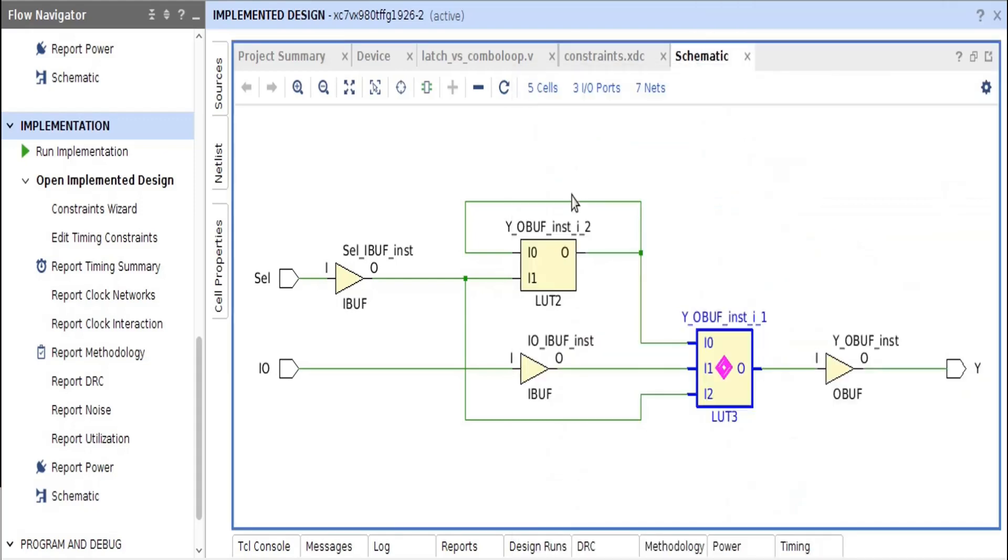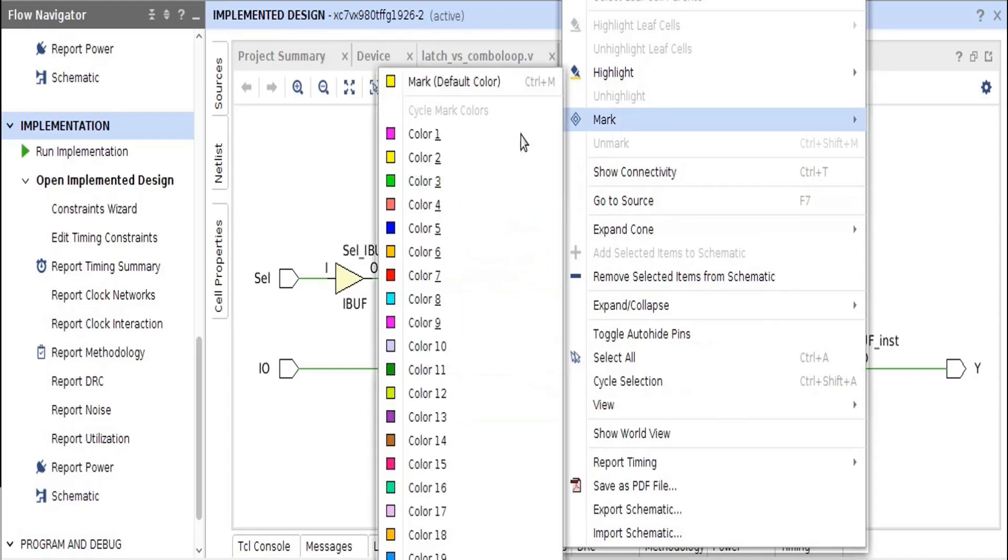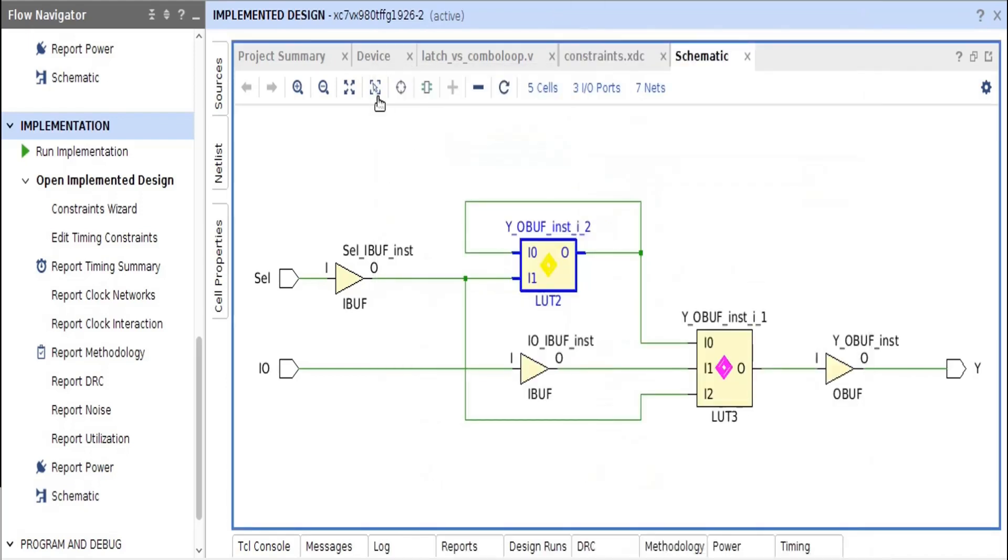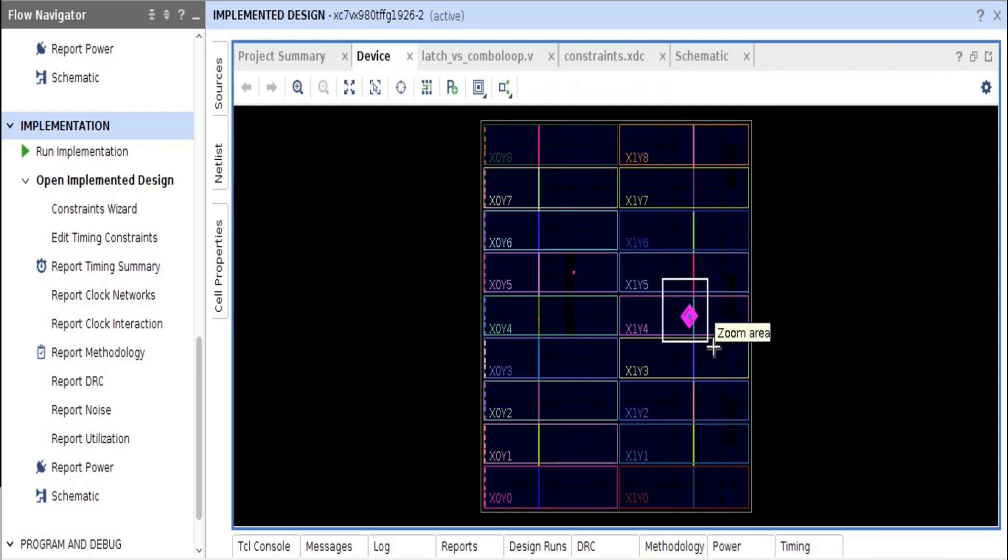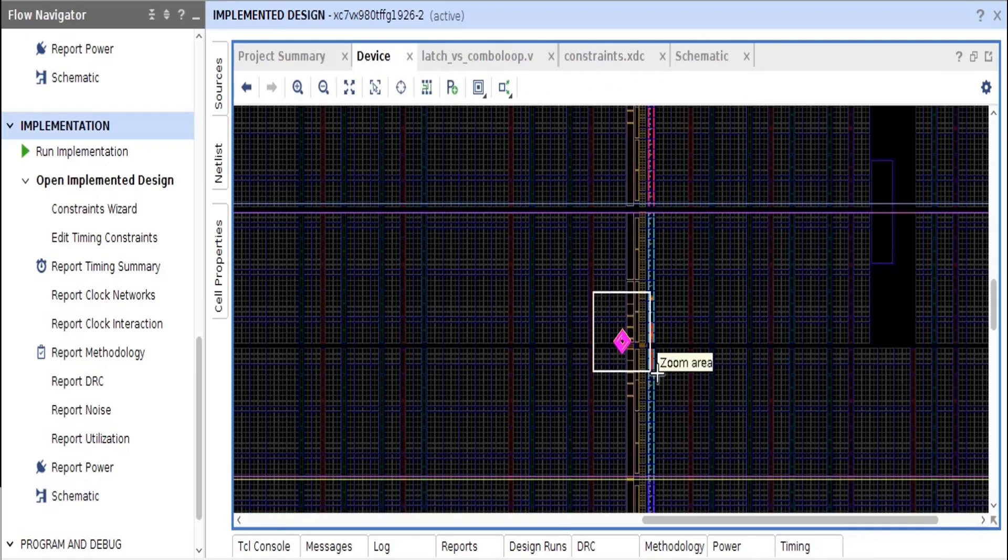Let us mark one of them in pink and another one as yellow. Now I am going to the device view. Device view. Let us zoom this area.